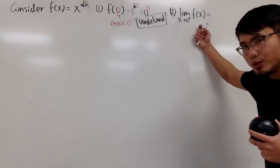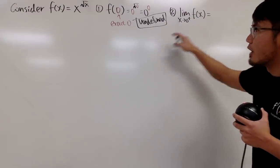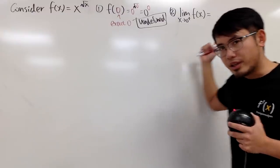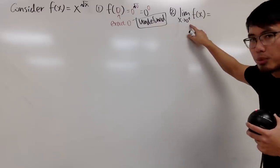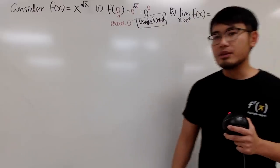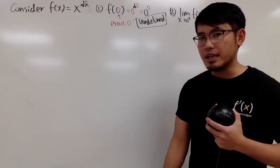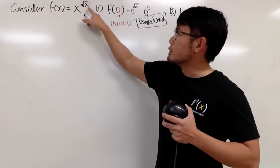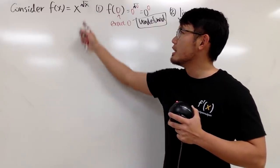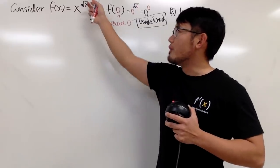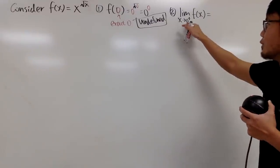Now, if we are doing calculus — if we are talking about the limit as x approaching 0 plus of this function — we actually end up with a nice answer. The reason I put 0 plus is because we cannot have 0 minus. Approaching from the left means x is negative, and the square root of a negative number is not real. Also, a negative base to a function power doesn't make sense. So we just focus on 0 plus.